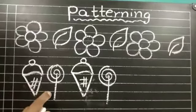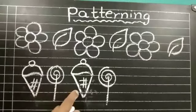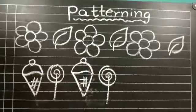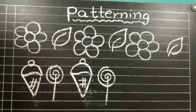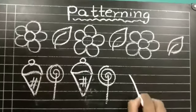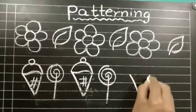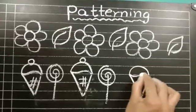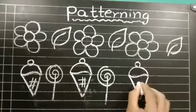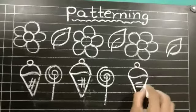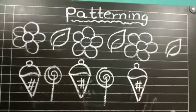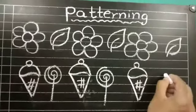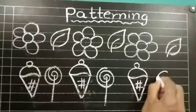Ice cream, lollipop. Ice cream, lollipop. So, what will come next? Yes, ice cream. Very good children. Then, what will come next? Lollipop.